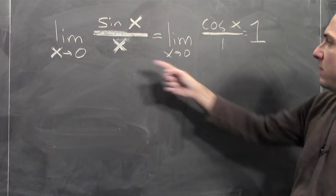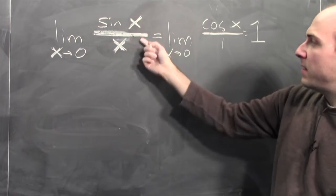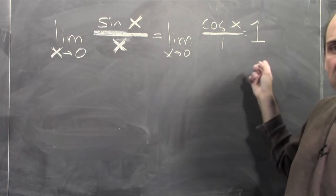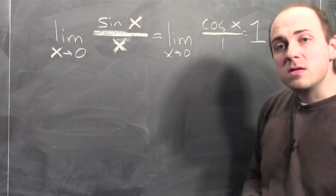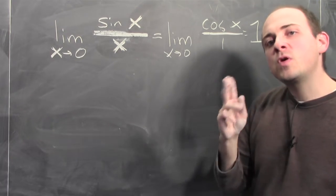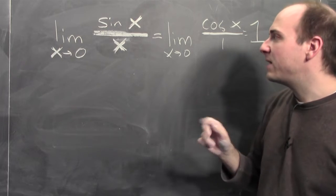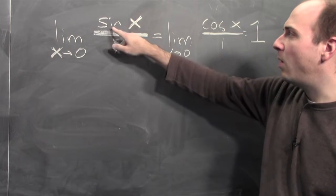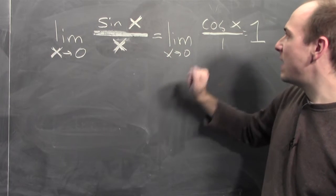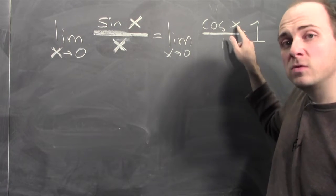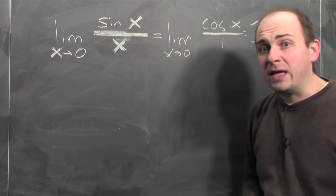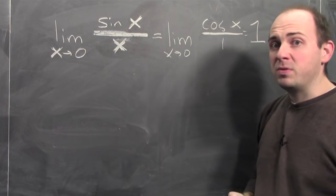The limit of sine x over x as x approaches zero is in fact one. This looks good. But the question is: how did you know that the derivative of sine x was cosine x? You needed to know that in order to apply L'Hopital.